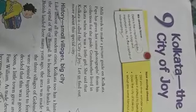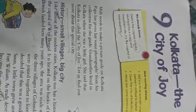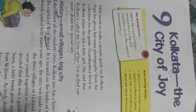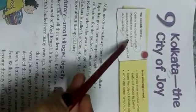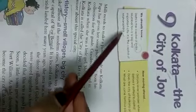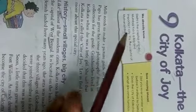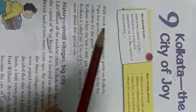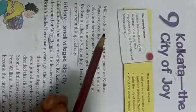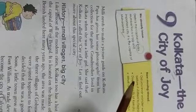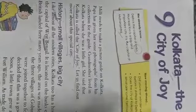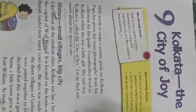Assalamualaikum, my dear children. I am here with the 9th lesson revision, that is Kolkata: The City of Joy. In this lesson we are going to focus on just the main points. We already know that Delhi is the capital of India, and Mumbai is also a big and important city — it is the capital of Maharashtra. Delhi, Mumbai, Kolkata, and Chennai are the four metropolitan cities of India. Metropolitan means big cities, and that is the reason why we are learning about these cities.